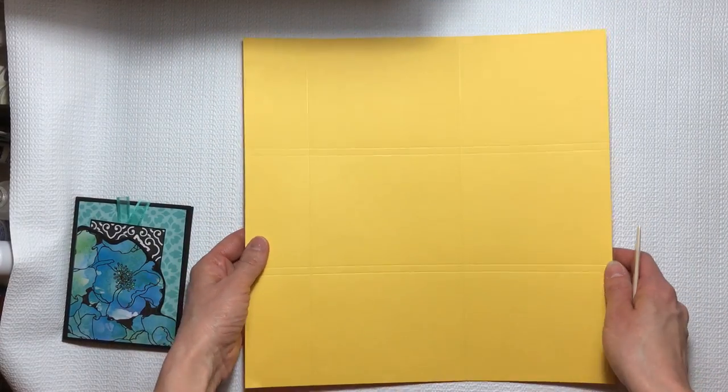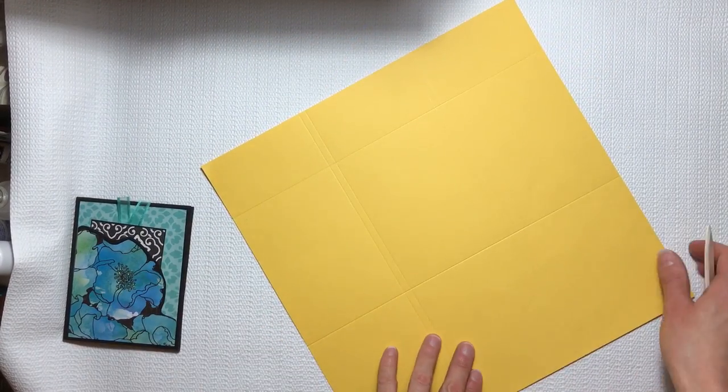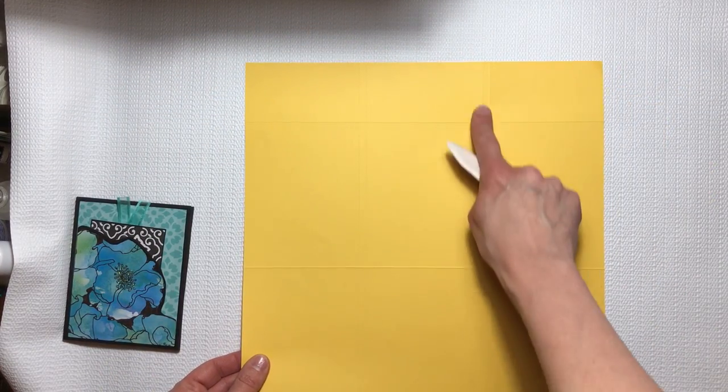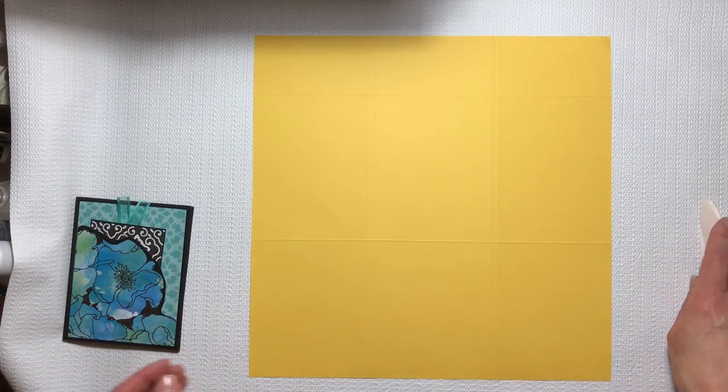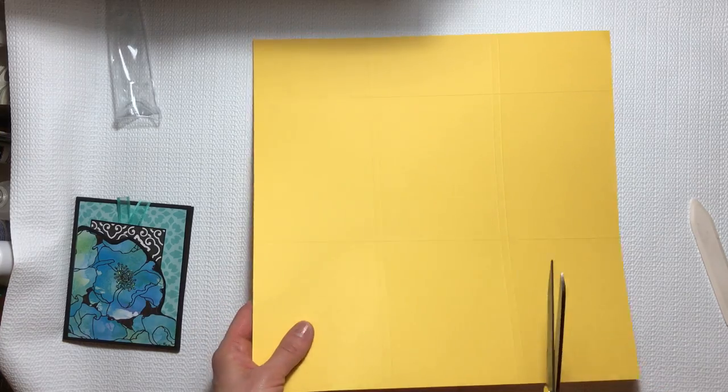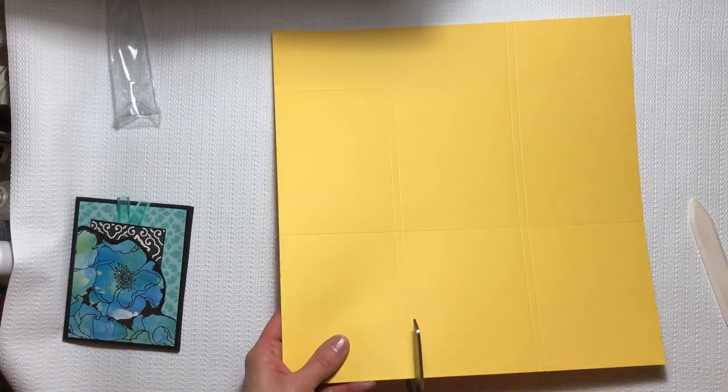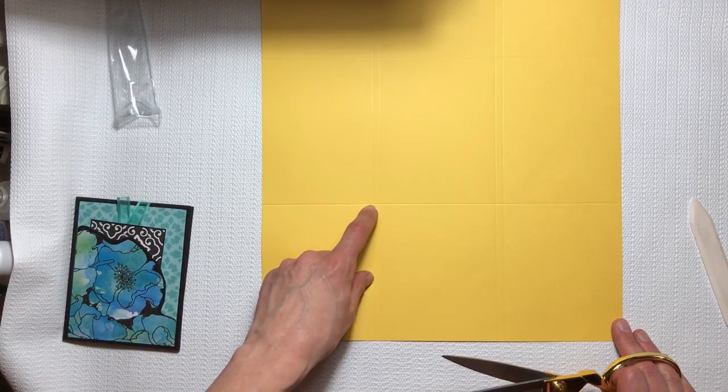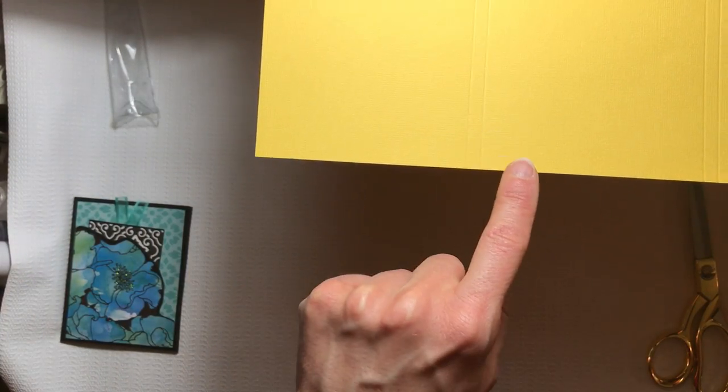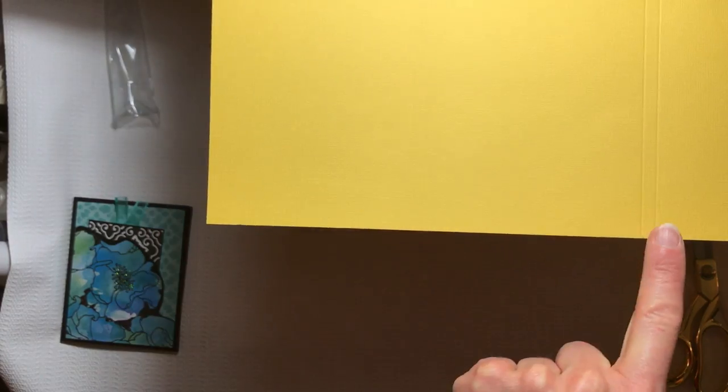Hopefully you can see the score lines, put it closer. So then the next thing you want to do is cut from the bottom to the score line, and you're going to cut out that little middle piece right here. I'm going to cut out that strip here and here and on the top as well.